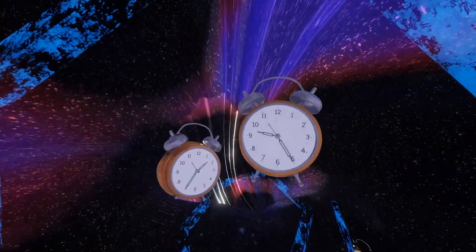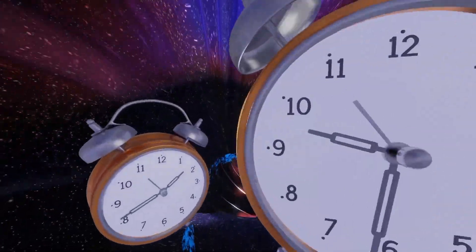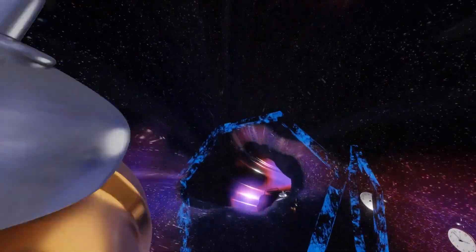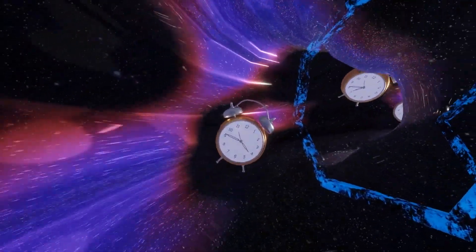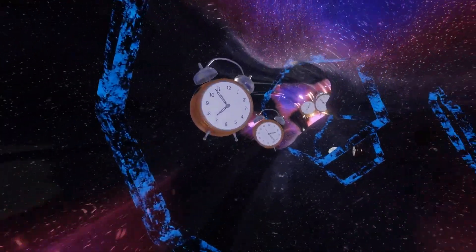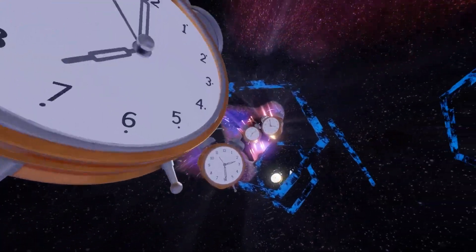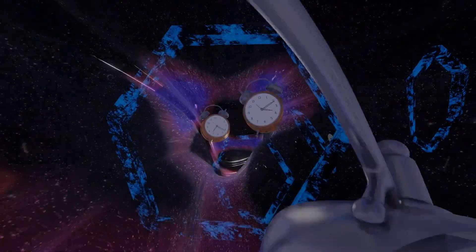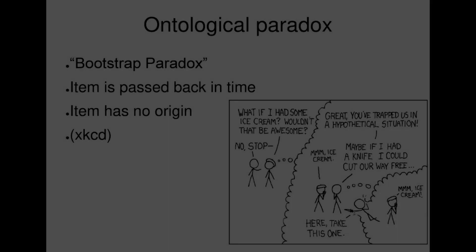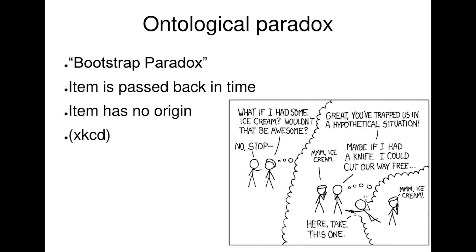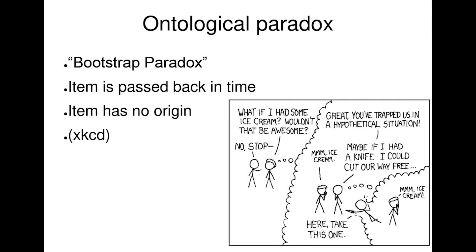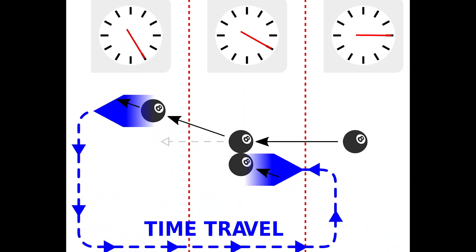It occurs when an object or piece of information sent back in time gets trapped within an infinite cause-effect loop, in which the item no longer has a unique point of origin, and is said to be uncaused or self-created. It's also known as the ontological paradox, in reference to ontology, a branch of metaphysics dealing with the study of being and existence.